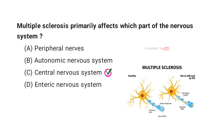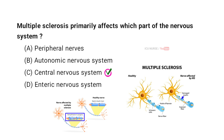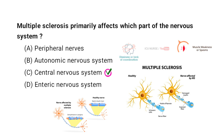Multiple sclerosis primarily affects the central nervous system because it is an autoimmune disease that targets the myelin sheath — the protective covering of nerve fibers. When the immune system mistakenly attacks the myelin, it disrupts communication between the brain and the rest of the body, leading to symptoms such as muscle weakness, coordination problems, and cognitive difficulties.